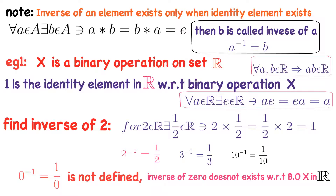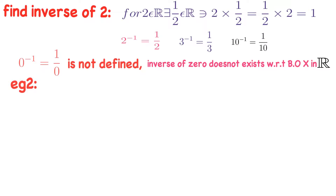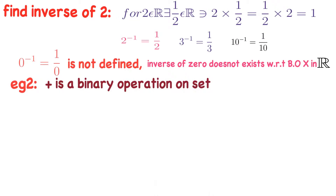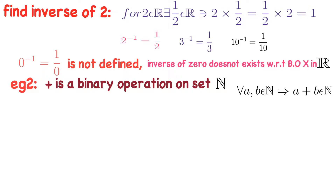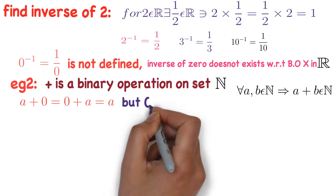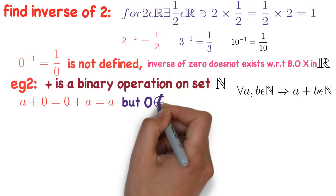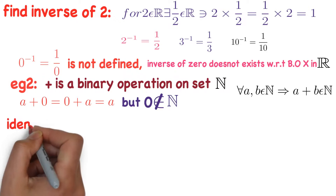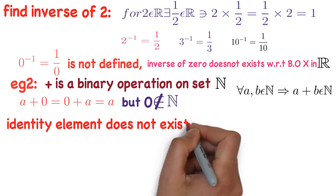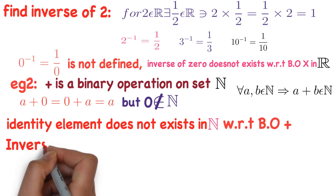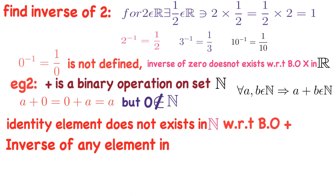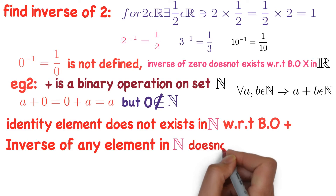One more example: addition is a binary operation on the set of natural numbers. For any two natural numbers, their sum is again a natural number, so addition is a binary operation on ℕ. Now checking for an identity element: A plus 0 equals 0 plus A equals A, but 0 is not a natural number. So the identity element does not exist in ℕ with respect to addition, and therefore the inverse of any element in ℕ does not exist.